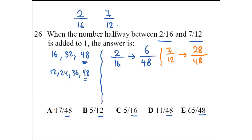The two fractions I now have are 6 over 48 and 28 over 48. What's the number between 6 and 28? Do 28 minus 6. You get 22. Divide that by 2. It's 11. And then add 11 to 6. So it's 17.